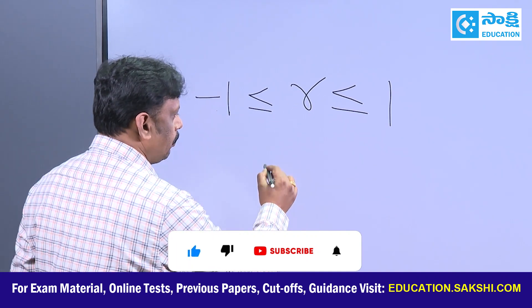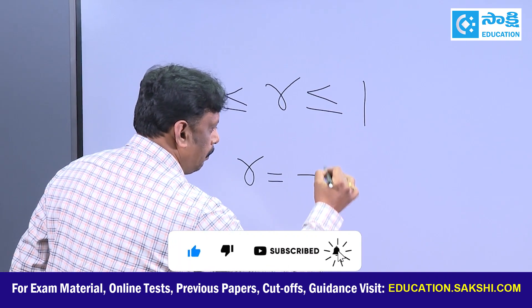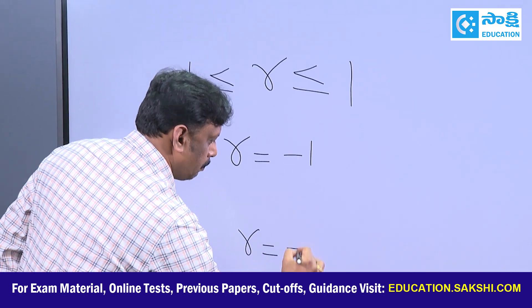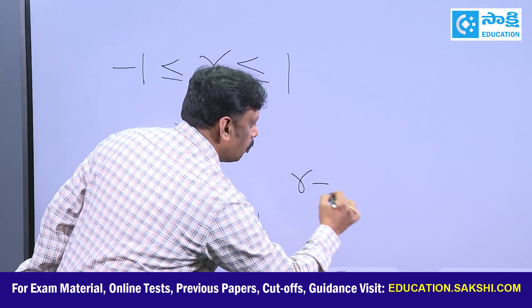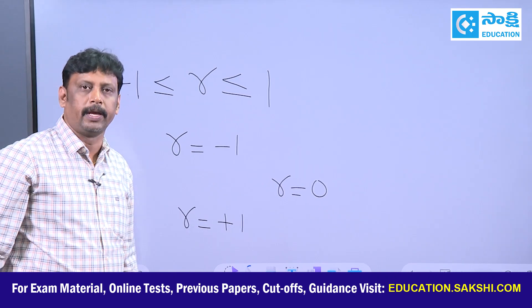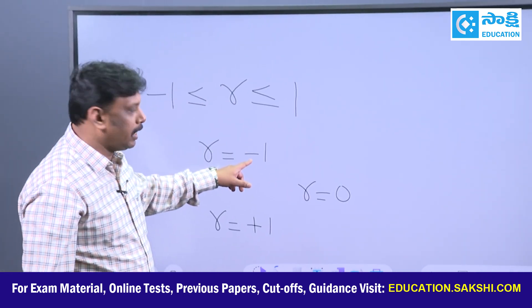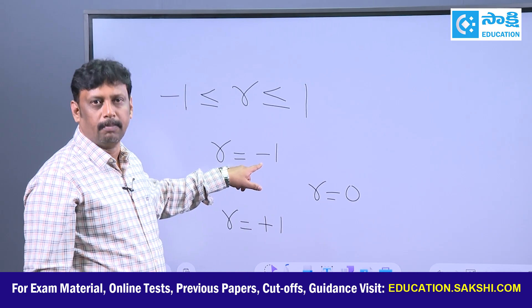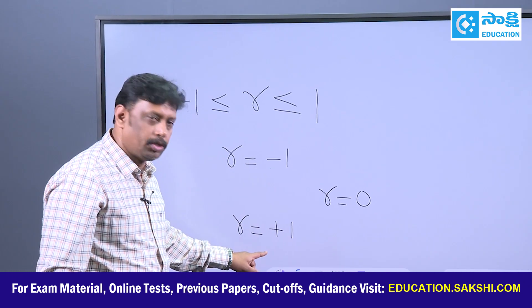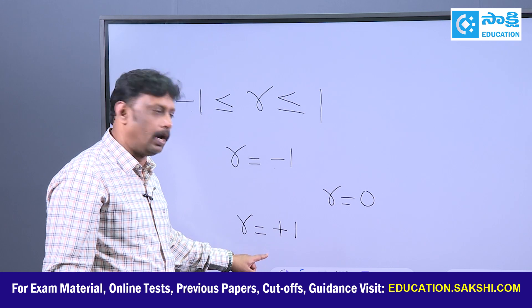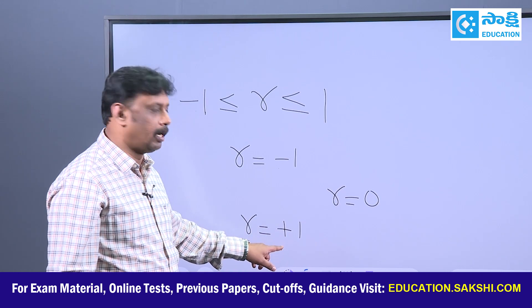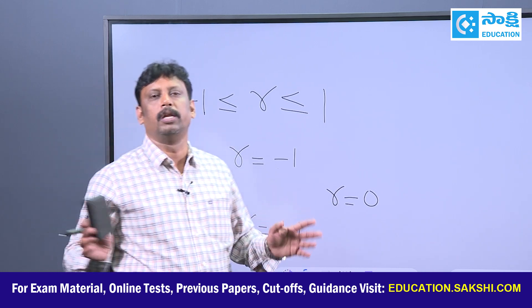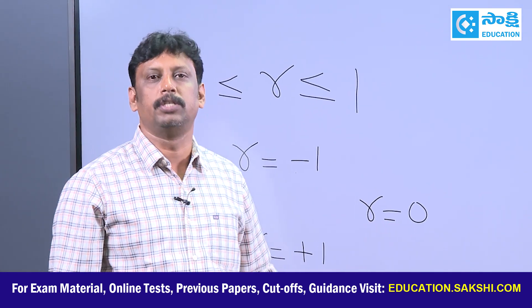r can be equal to minus one, r can be equal to plus one, and r can also be equal to zero. If there is a negative correlation, or what we call an inverse relation, then the value of r will be minus one. If there is a positive correlation, the value of r will be plus one — we call it perfectly positive linear correlation. And if there exists no relationship between variables, then r is equal to zero.